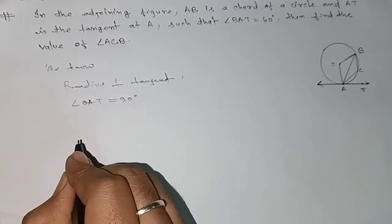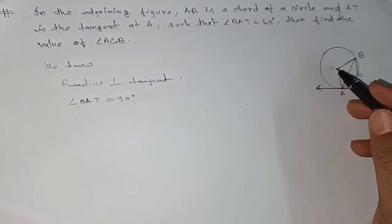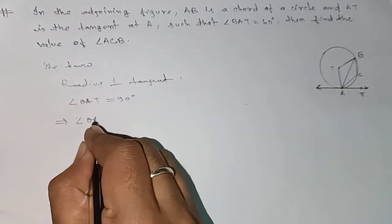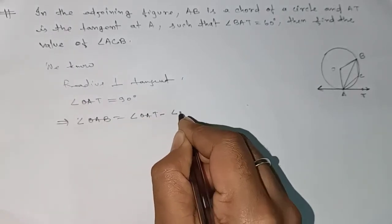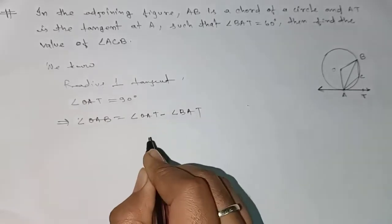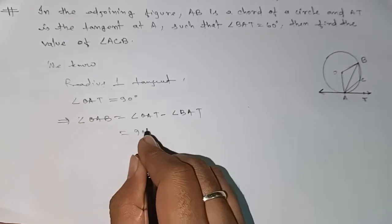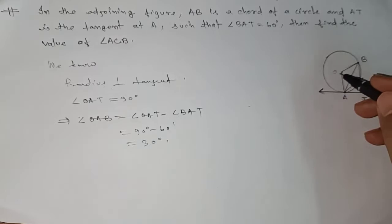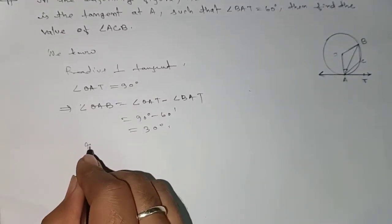This means angle OAB equals angle OAT minus angle BAT. The value of BAT has been given as 60 degrees, so 90 minus 60 degrees gives us 30 degrees. So we have angle OAB equals 30 degrees as we enter into triangle OAB.